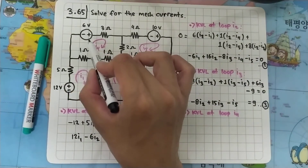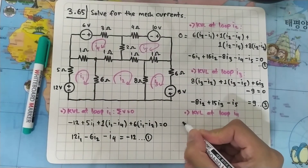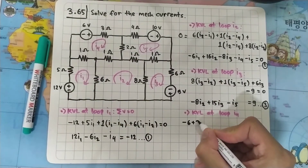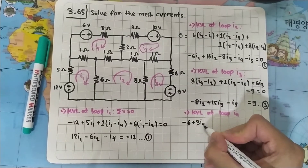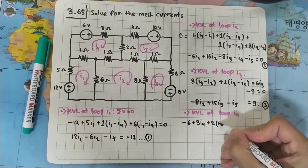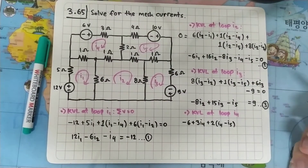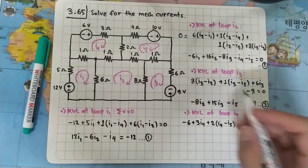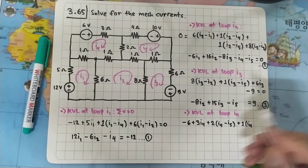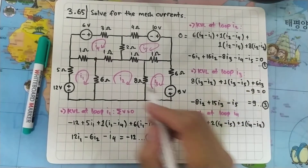KVL at loop I4: starting from the voltage source, current flows from negative to positive so the sign is negative and the value is 6. Moving to the 3 ohm resistor, the only current is I4. Then the 2 ohm resistor focuses on I4, but I5 is flowing in the opposite direction so minus I5. Then the 1 ohm resistor multiplied by I4, but I2 is flowing in the opposite direction.